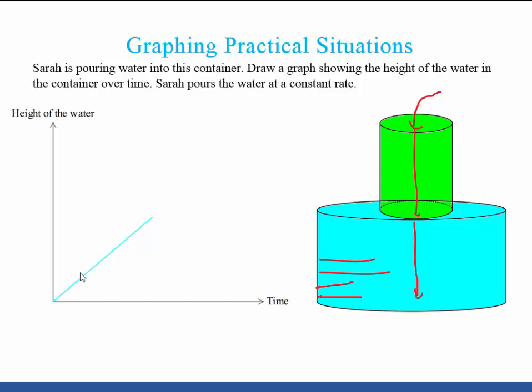And this straight line is because the height of the water is going in at a constant rate. And in fact, the gradient of this actually represents the constant rate of water going in. But the height of the water is increasing at the same rate as time goes by.